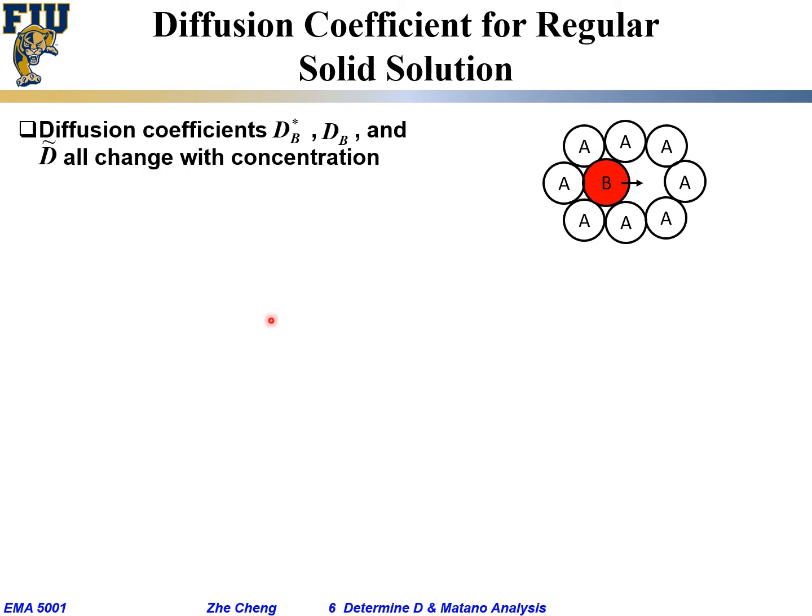Previously we talked about how we can get the diffusion coefficient if the diffusion coefficient does not change with concentration. In those cases, quite often, there will be an analytical solution for the so-called Fick's Law. Once you get a concentration profile, you can mathematically fit the measured concentration profile to your analytical solution, and you can easily get the diffusion coefficient.